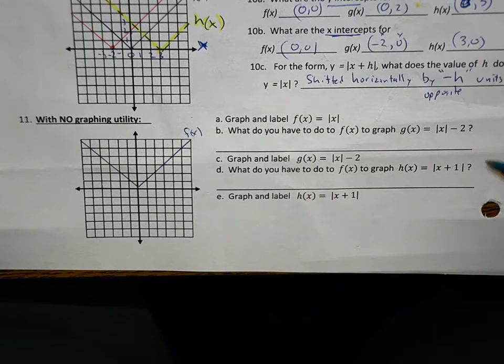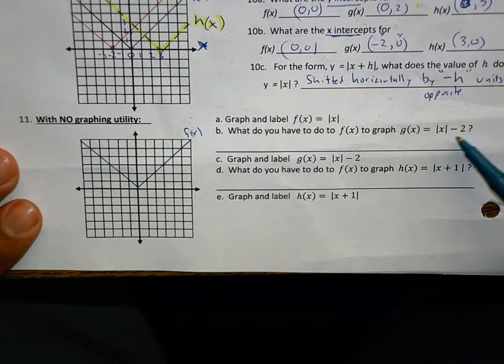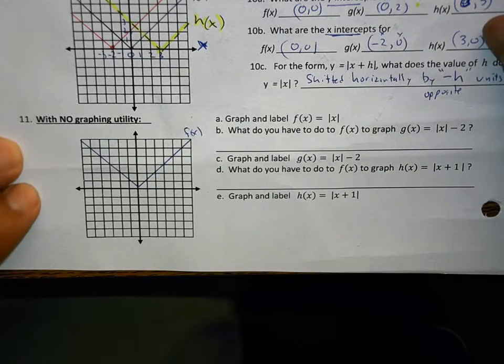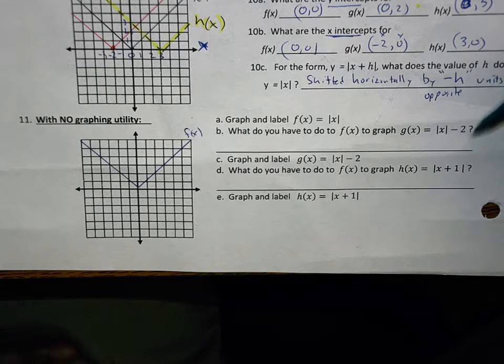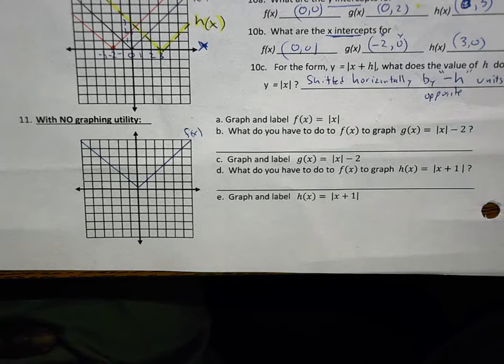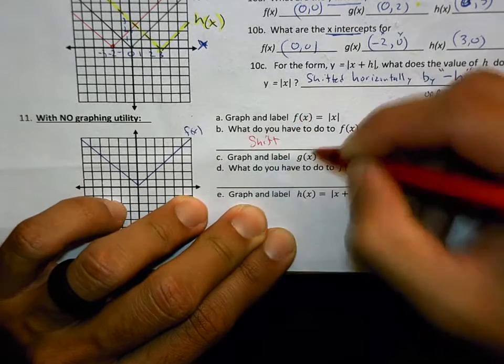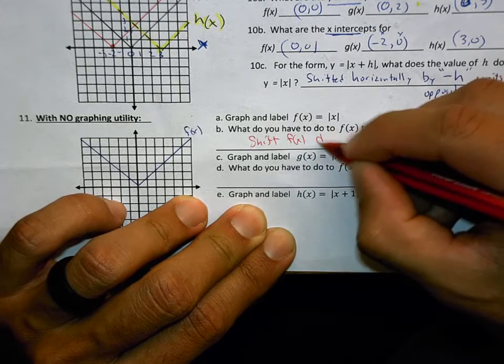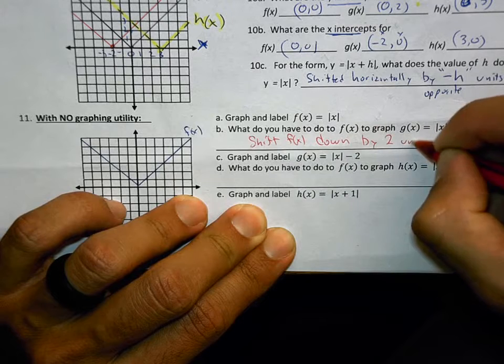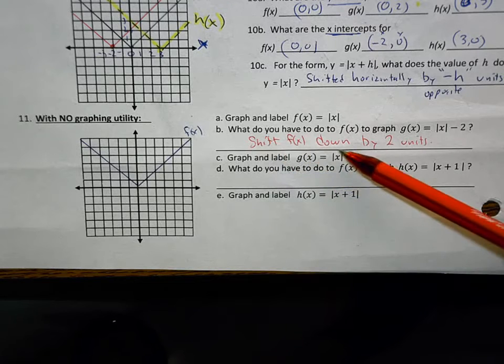Let's check to see if you understand. What do you have to do to this function to graph g of x, which is absolute value of x minus 2? What will this minus 2 do to that graph? If you know, tell the person you're sitting next to. What will this do? It'll change the wires to negative 2. I think. The answer. It will shift the function down by 2 units.